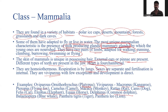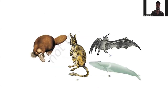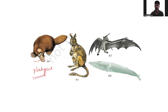Panthera tigris (tiger), Panthera leo (lion), and many more examples come under Mammalia. You can see platypus, kangaroo, bat (flying mammal), and whale (aquatic mammal) as examples. This is all about phylum Mammalia.